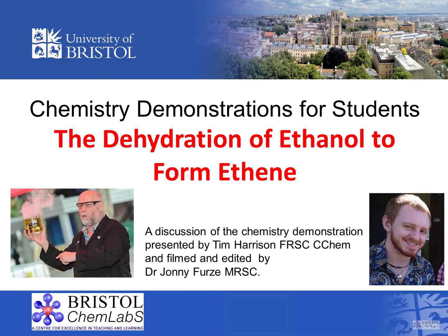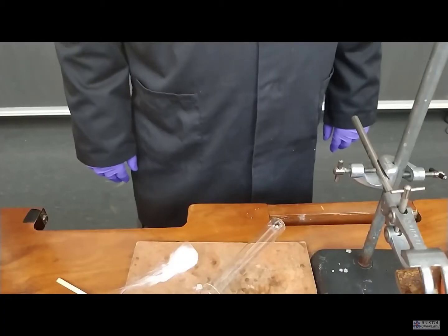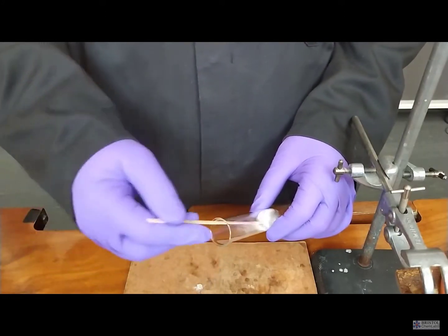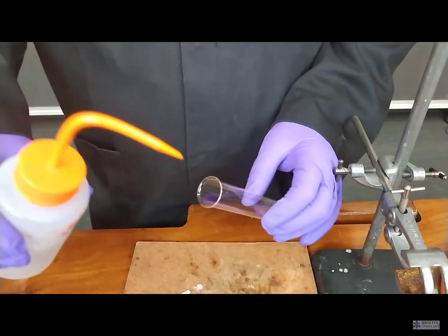In this experiment we're going to look at the dehydration of ethanol to form ethene gas. Dehydration is the removal of the elements of water—that is, removing two hydrogens and an oxygen—which in the end of the reaction become water. In the case of ethanol becoming ethene, this leads to the formation of a double bond, and we'll also look at the chemical test for a double bond, or a chemical test for unsaturation.